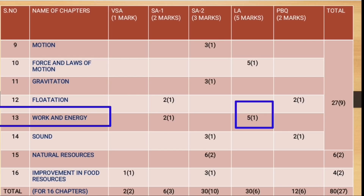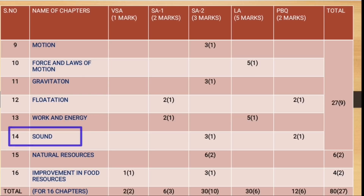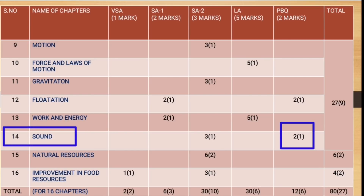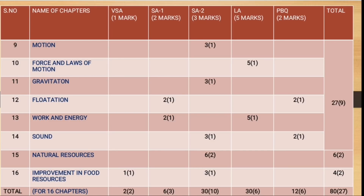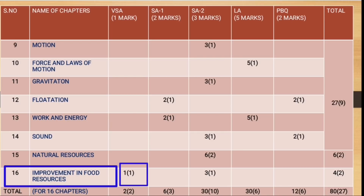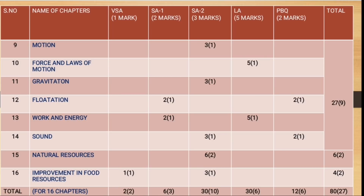Chapter 13, Work and Energy, covers one question for two marks and one question for five marks. Chapter 14, Sound, covers one question for three marks and there will be one question from the practical. Chapter 15, Natural Resources, covers two questions for three marks, totaling six marks. Chapter 16, Improvement in Food Resources, covers one question for one mark and one question for three marks.